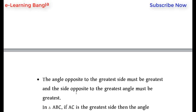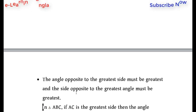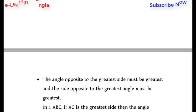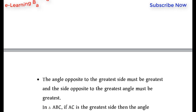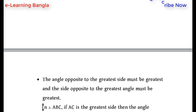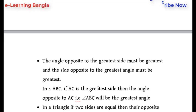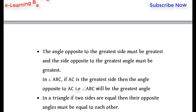If AC is greater than BC, the angle opposite AC is greater. The angle opposite to the greatest side must be greatest, and the side opposite to the greatest angle must be greatest.